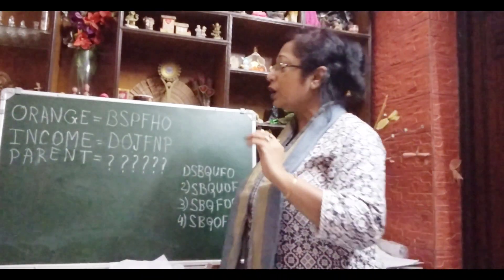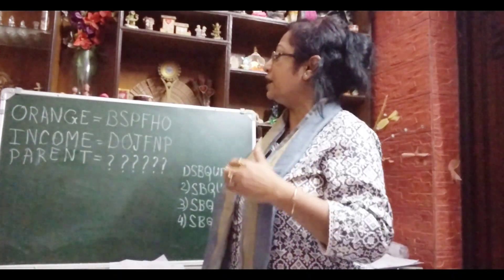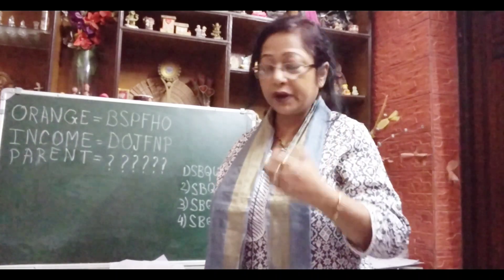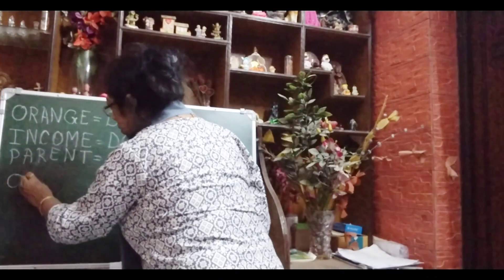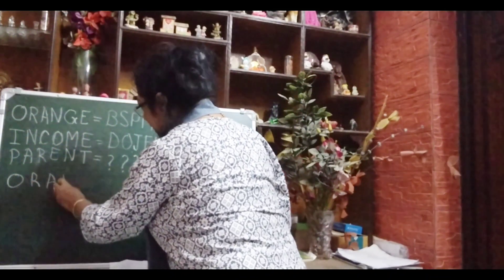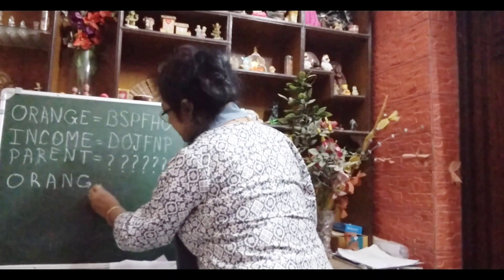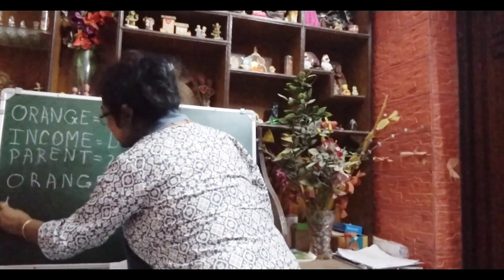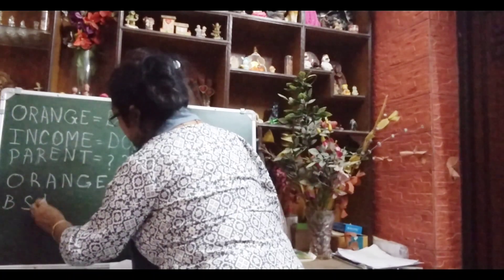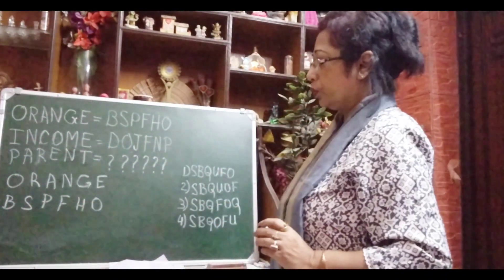Now, see what the trick is and how we will find it out. First, we will decode it — find out the proper code. I am writing O-R-A-N-G-E with gaps. Leave gaps — you will understand why. And below I write the code: B-S-P-F-H-O. I have written both rows now.